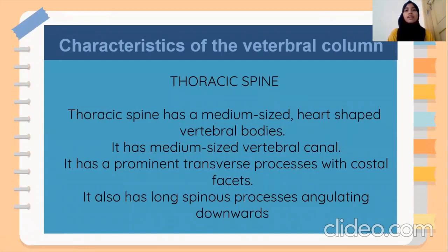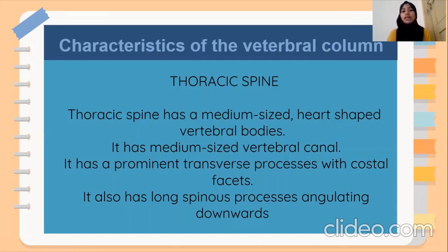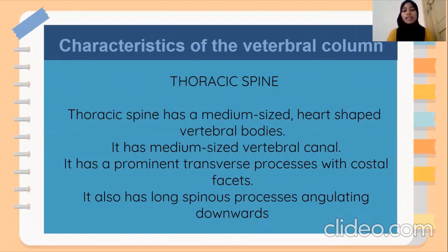Here we can see the characteristic of the vertebral column — the thoracic spine. The thoracic spine has a medium-sized heart shape, and it has vertebral bodies with a medium-sized vertebral channel. It has a prominent transverse process and a long spinous process angling downward.